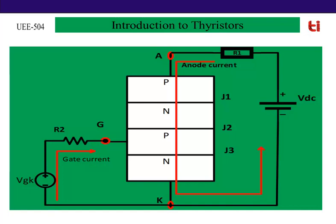Similarly, in the triggering circuit, the resistance offered by the gate to cathode junction is very low when the SCR is on, and that gate current could increase to a higher value, which can damage the triggering circuit. More about this important point we will discuss in coming classes.